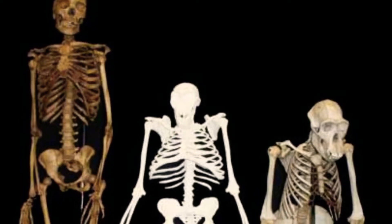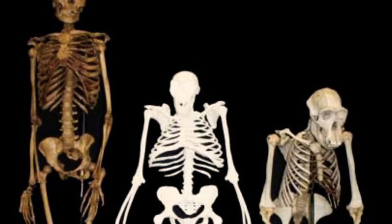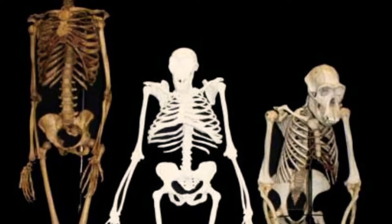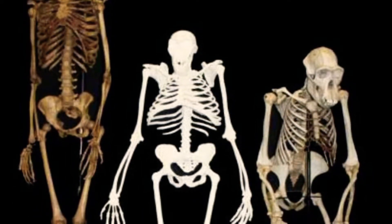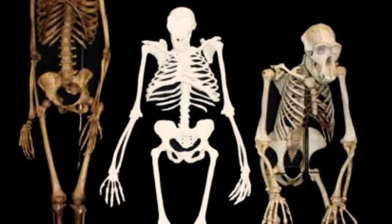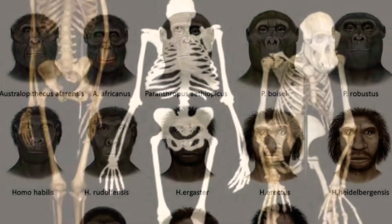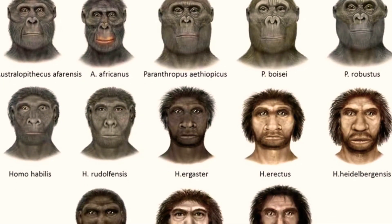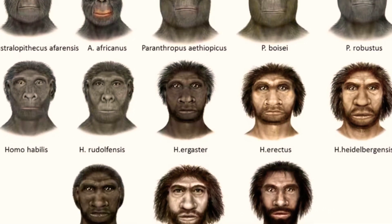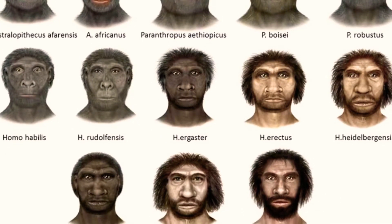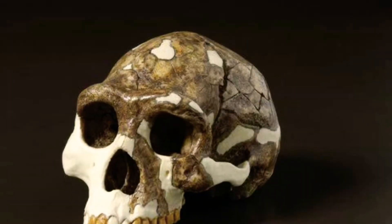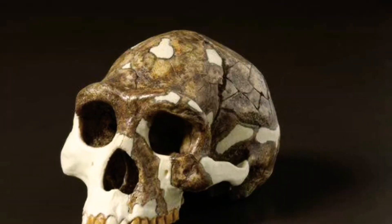Genetic studies show that primates diverged from other mammals about 85 million years ago in the late Cretaceous period, and the earliest fossils appear in the Paleocene around 55 million years ago. Human evolution from its first separation from the last common ancestor of humans and chimpanzees is characterized by a number of morphological, developmental, physiological, and behavioral changes.